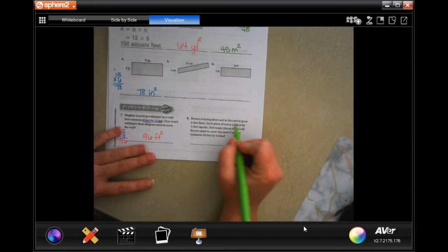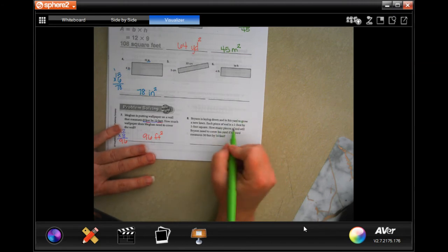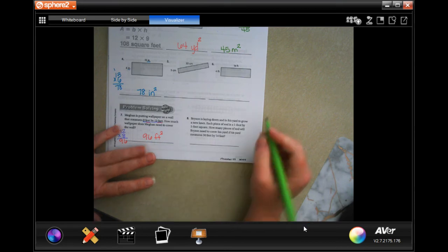Bryson is laying down sod in his yard to grow a new lawn. Each piece of sod is one foot by one foot square. How many pieces of sod will Bryson need to cover his yard? That measures 30 by 14.